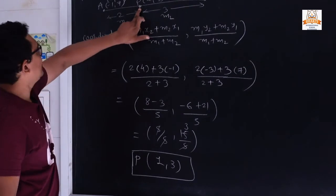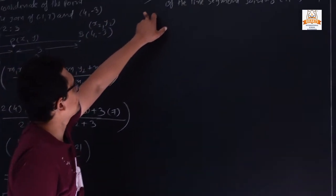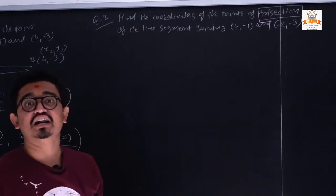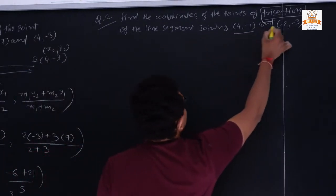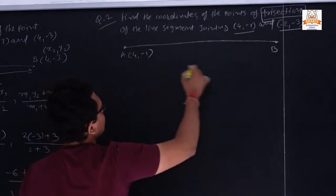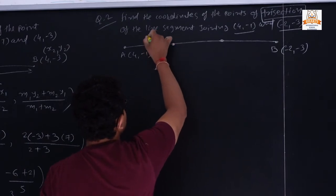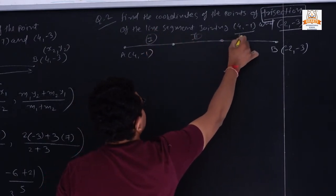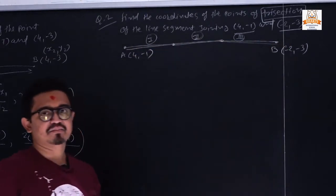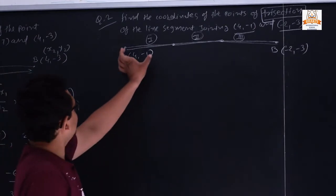Question number 2: find the coordinates of the points of trisection. Trisection means one line is divided into 3 equal sections. We draw line AB where A = (4, -1) and B = (-2, -3). Trisection gives us points at sections 1, 2, and 3. So we need to find two points P and Q. First we find point P.